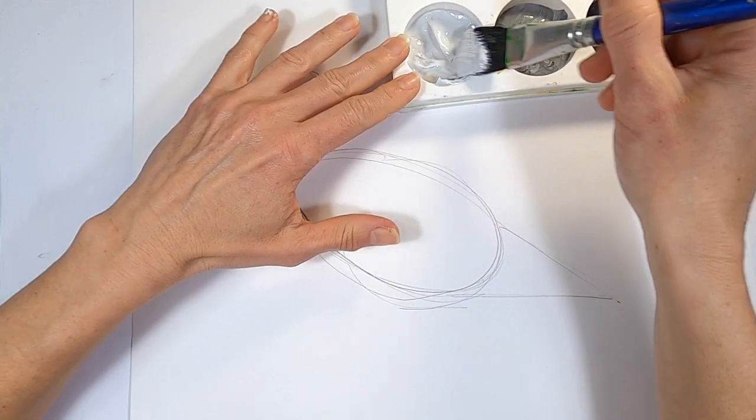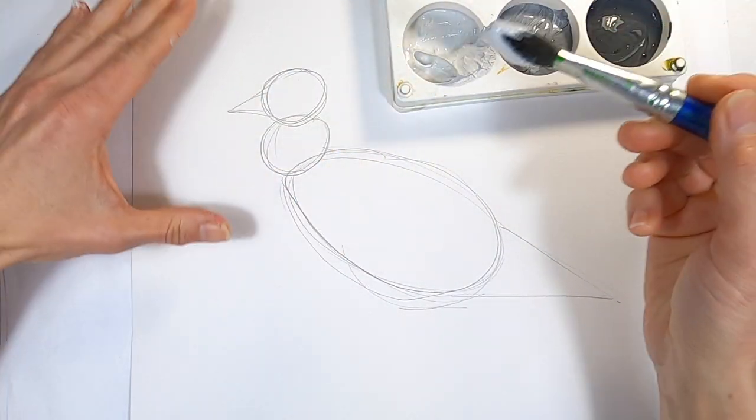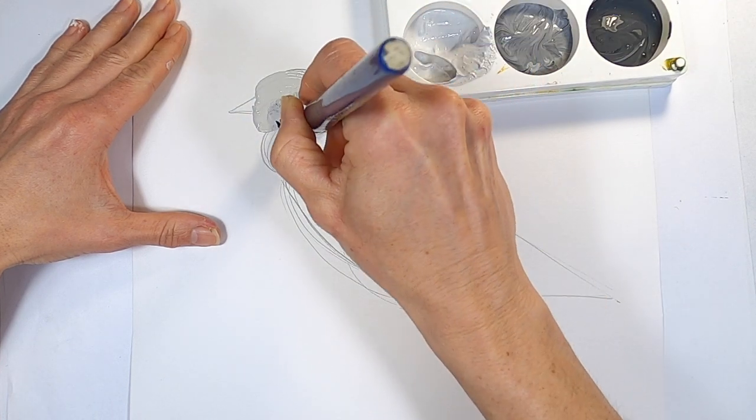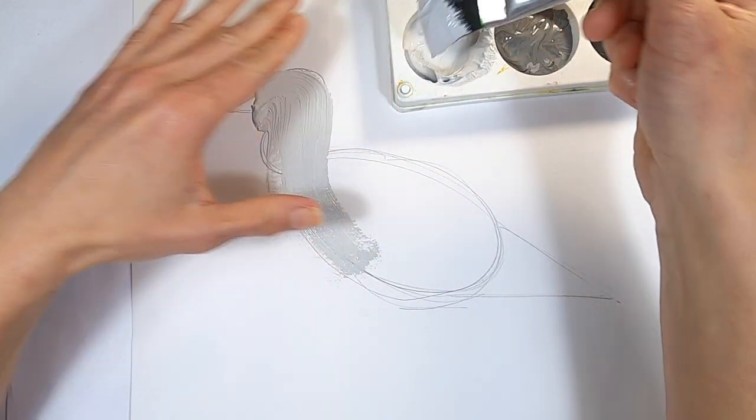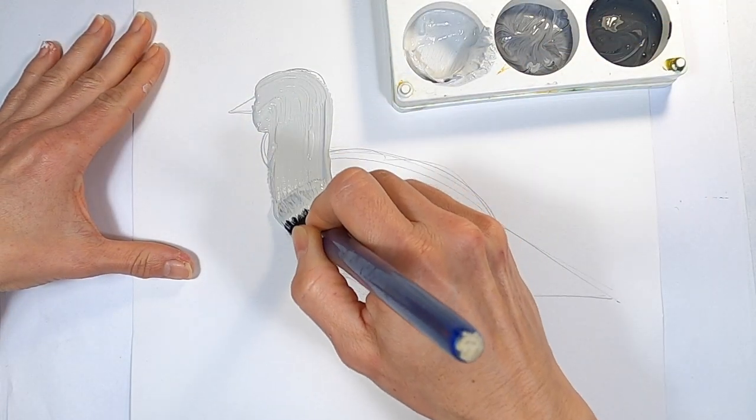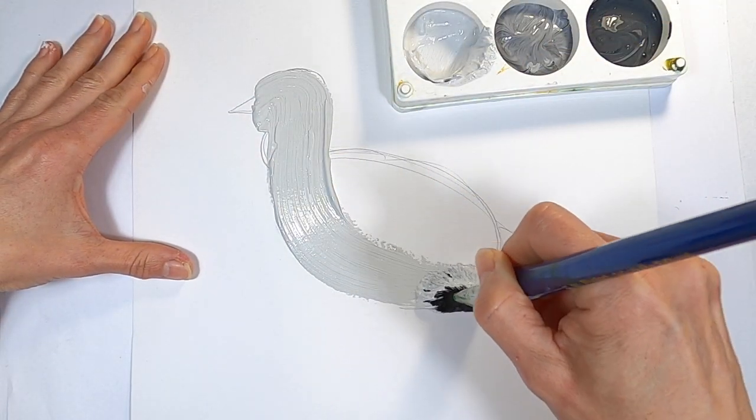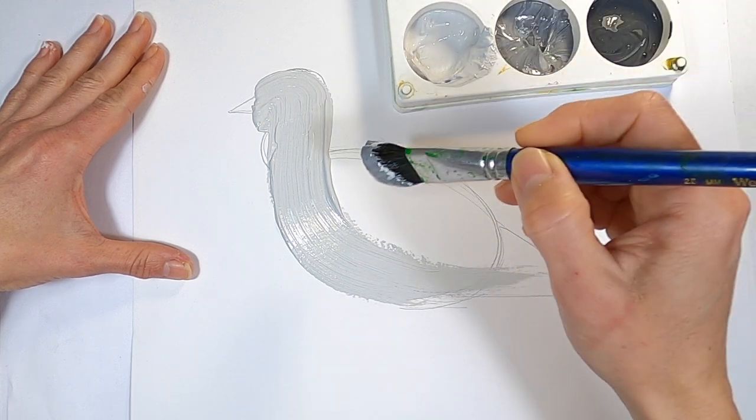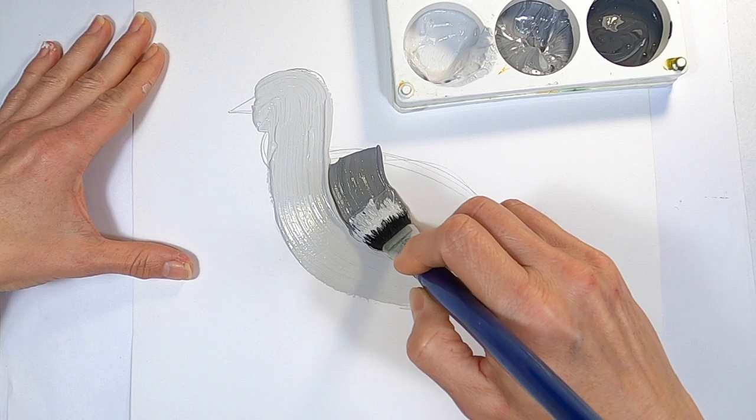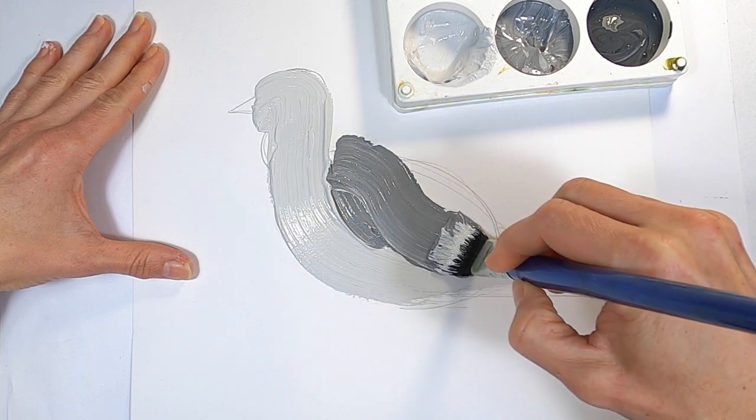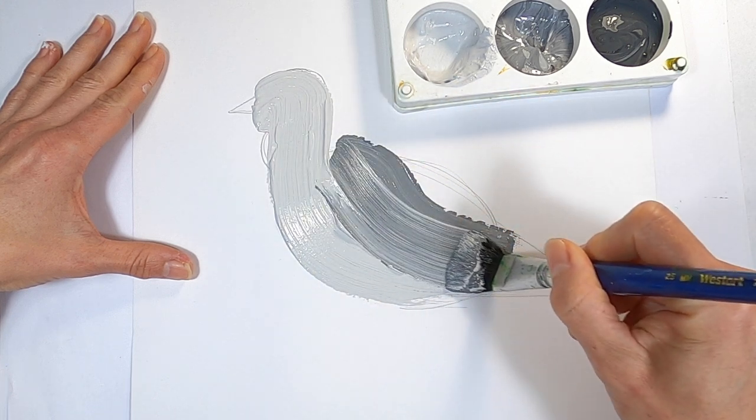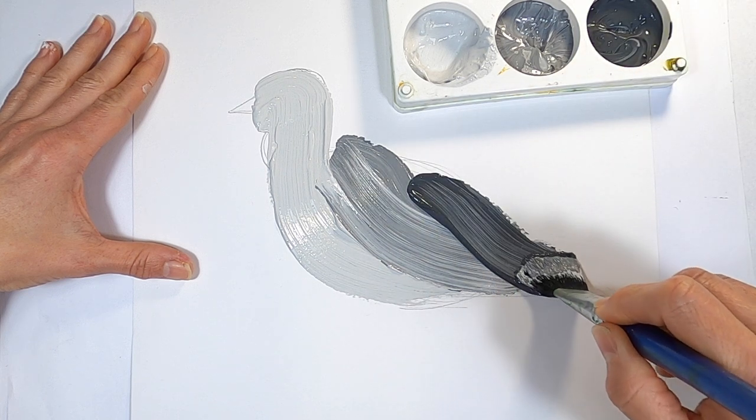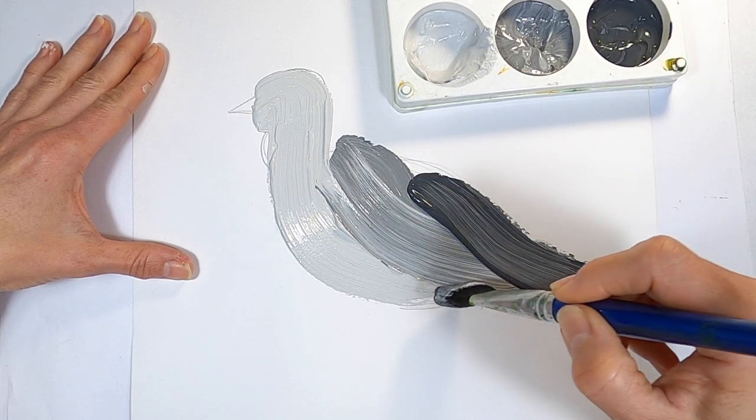Load the brush up with lots of light grey, then starting at the top, paint a swoosh from the head, down the neck and under the body. Now load up the brush with the medium grey, you don't need to wash the brush in between, and then paint another swoosh in the middle of the body. Finally paint some stripes of dark grey on the tail, then leave it to dry.